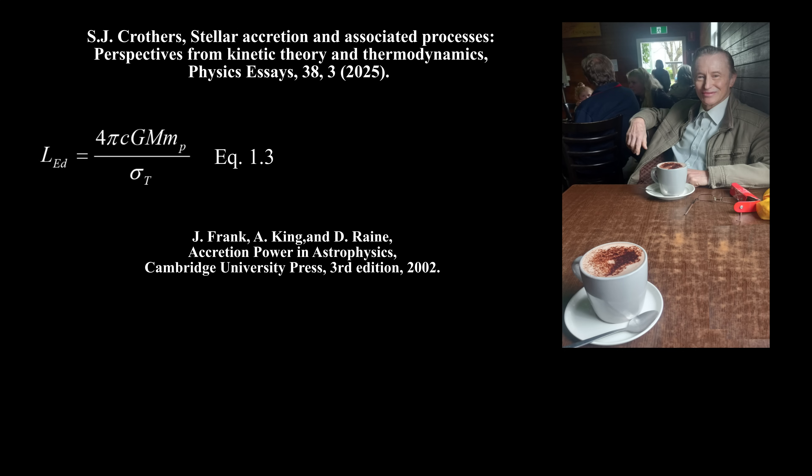The Eddington luminosity is, according to Frank, King and Raine, given by their equation 1.3. Here, sigma sub t is the Thomson cross-section. Where the kinetic energy of matter falling into a star becomes radiation at the star's surface, the accretion luminosity, according to equation 1.5 of Frank, King and Raine, is given by this relation.